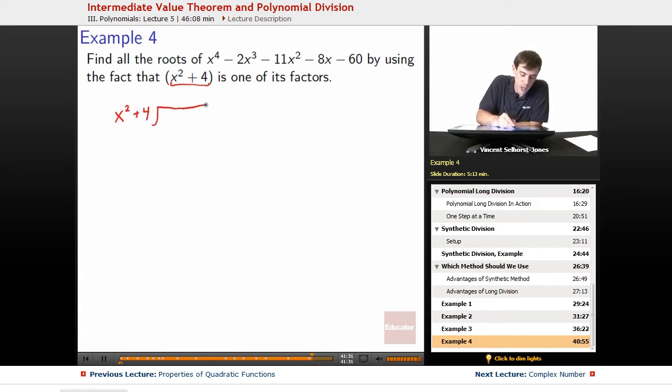So x^2 + 4, we plug in x^4 - 2x^3 - 11x^2 - 8x - 60. Great, so x^2 + 4 goes into x^4. But notice, do we have an x in here? We don't, so it's once again plus 0x.